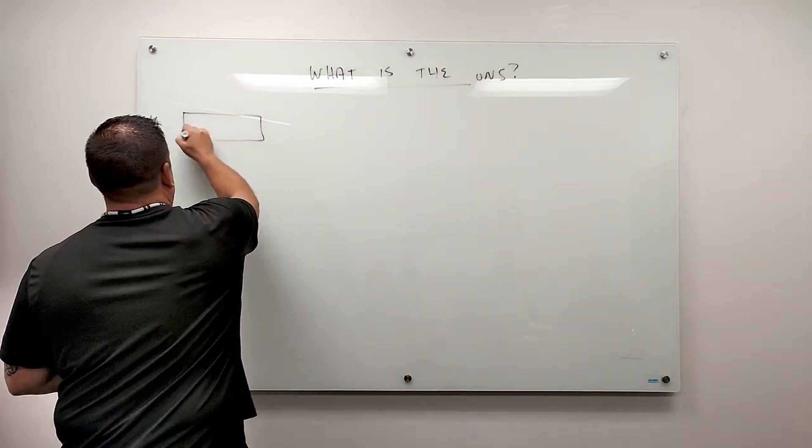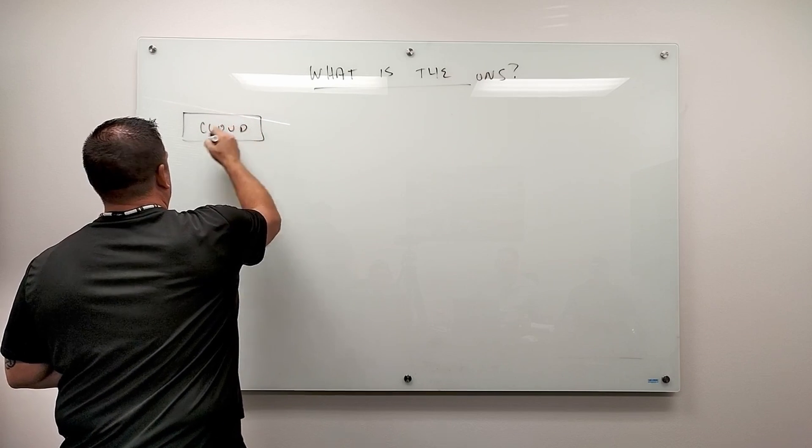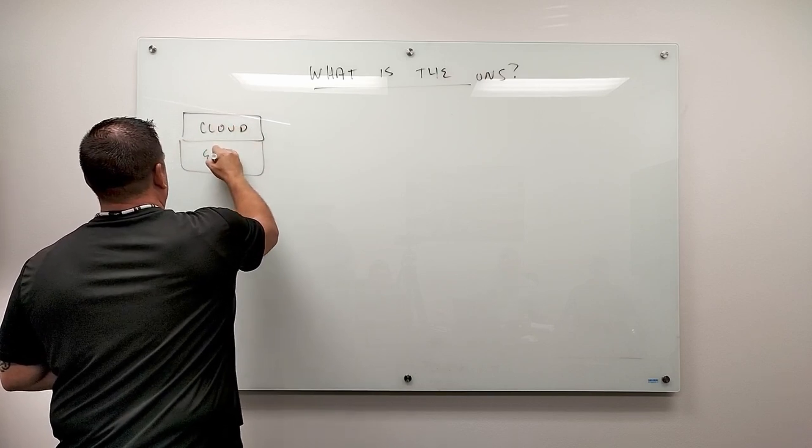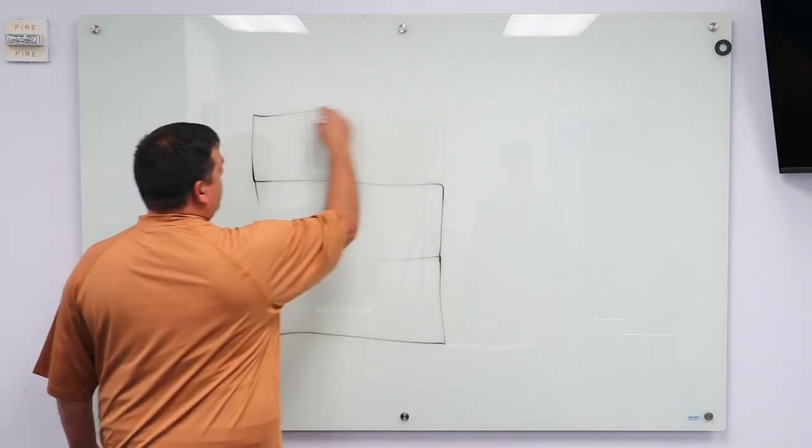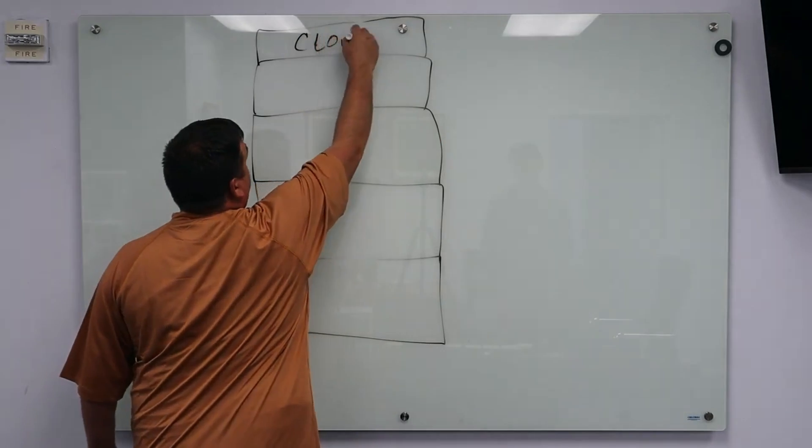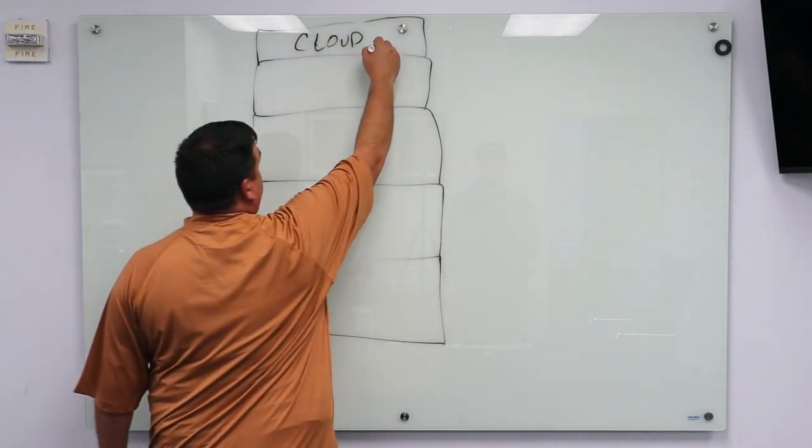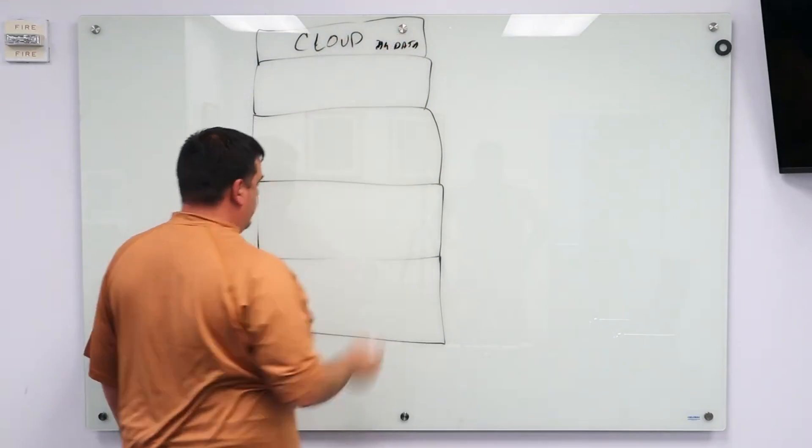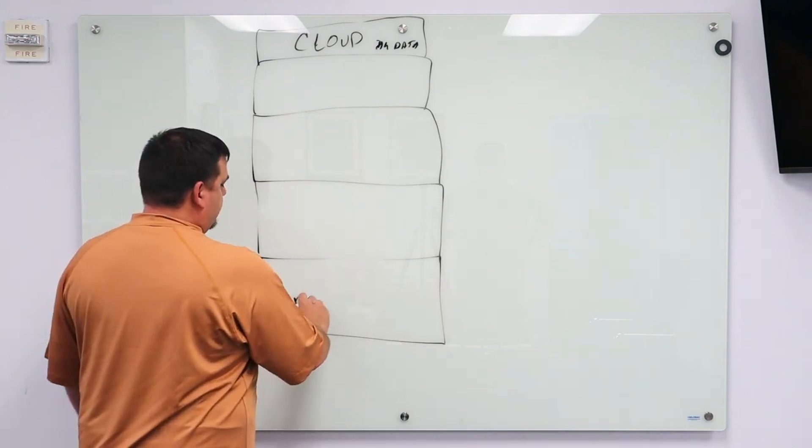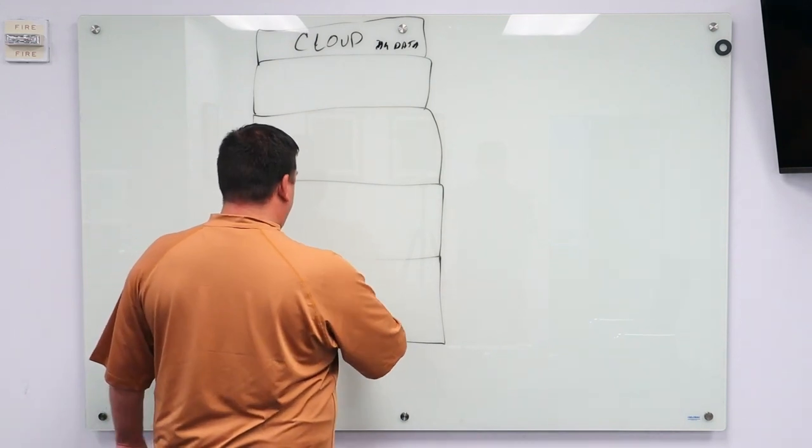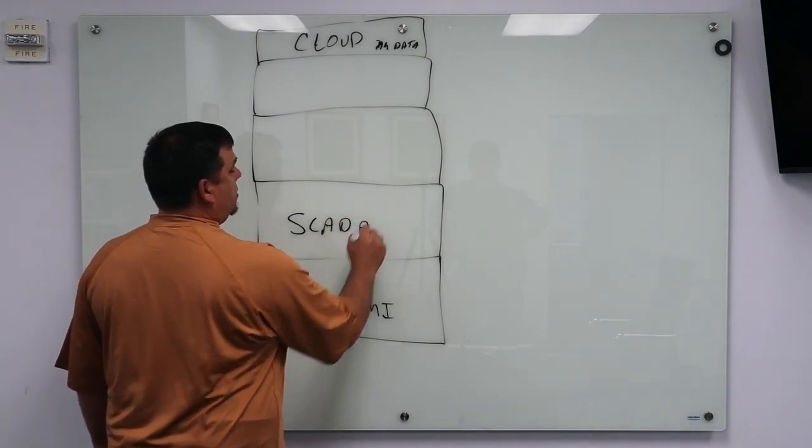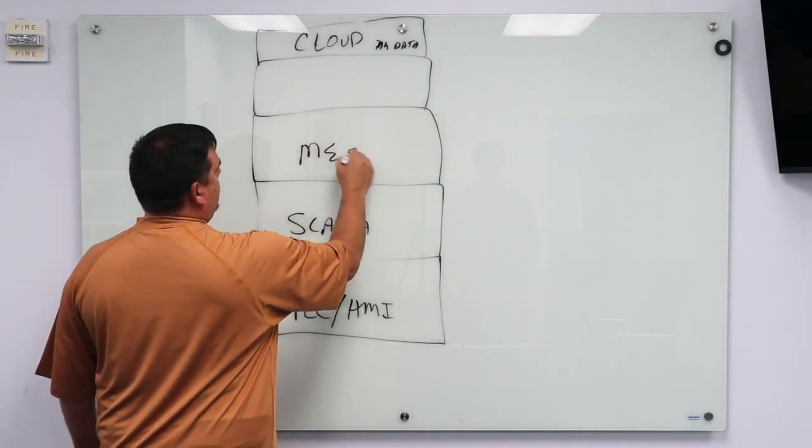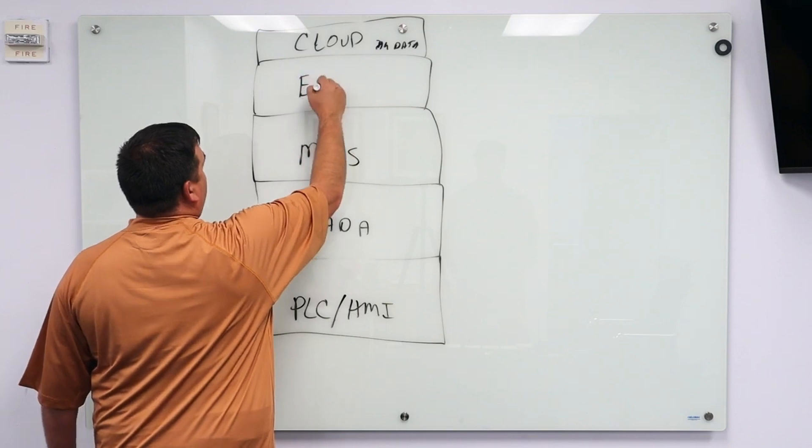All right, the thing you need to understand is we need to remember our layers of the automation stack. The actual automation stack is this cloud all the way up the top. This is big data, all that cool stuff, algorithms, machine learning. At the bottom, what we have is PLC, HMI, PLC, HMI. We have supervisory control and data acquisition. We have manufacturing execution systems and we have ERP.